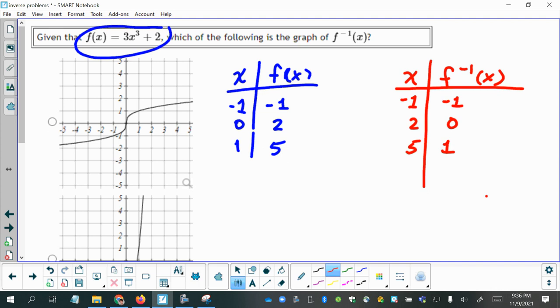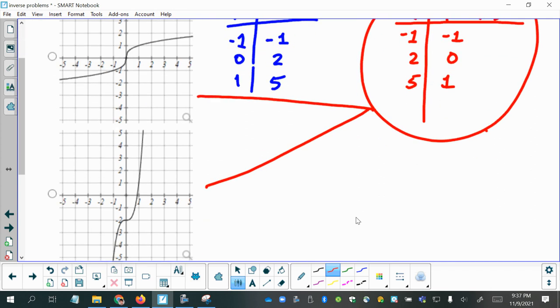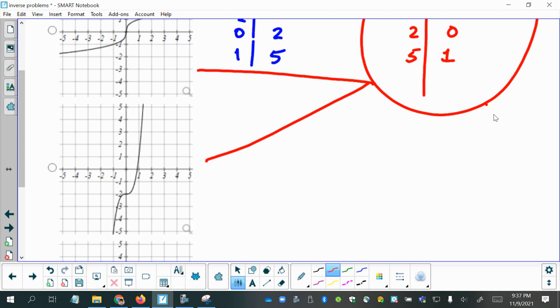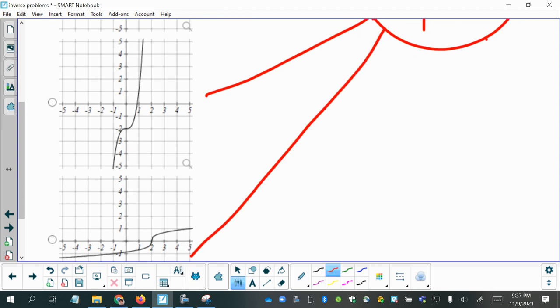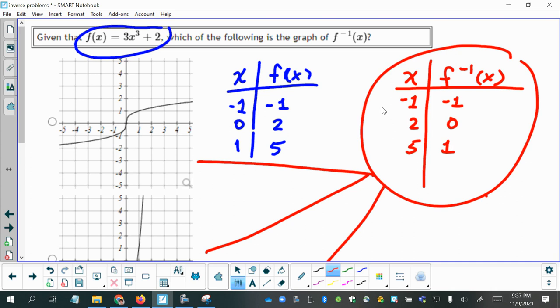All right, now what I'm really focused on now is this, and seeing which one of these graphs has these points on it. Because that will be my inverse of f. All right, so let's try the first one. So let's try the point 2 comma 0. And the reason I'm skipping negative 1, negative 1, is because it's also on the original function. So I'm going to look at ones that would only be on the inverse.